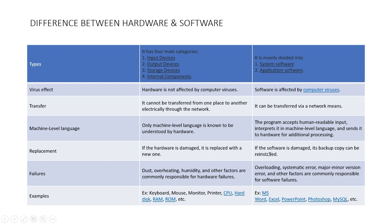Examples of hardware include keyboard, mouse, monitor, printer, CPU, hard disk, RAM, and ROM. Examples of software include MS Word, Excel, PowerPoint, Photoshop, and MySQL.